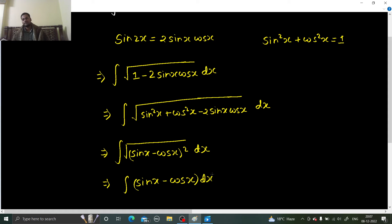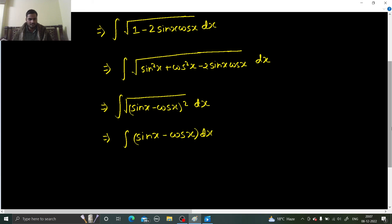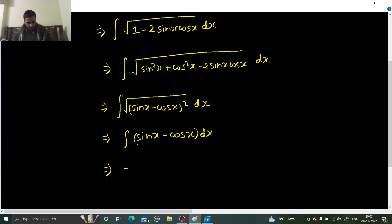In indefinite, we do not have to think much while removing this square root. Now, integral of sin x minus cos x, and integral of cos x is simply sin x plus a constant c. So you will be getting minus sin x plus cos x plus a constant c as your final answer.